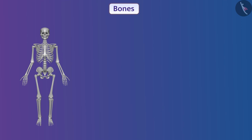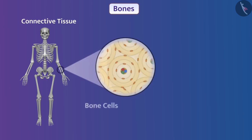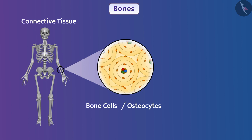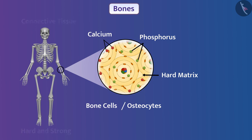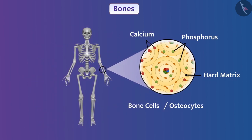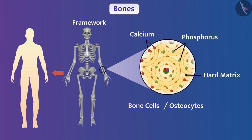We know that bone also connects the different organs of the body with each other, so bone is also a type of connective tissue. Bone cells, which are osteocytes, are embedded in a matrix composed of calcium and phosphorus. This matrix is hard, which makes the tissue hard and strong — that's why we are unable to bend bone. The bones form a framework which provides shape to the body, movement to different body parts, and support to muscles and main organs.